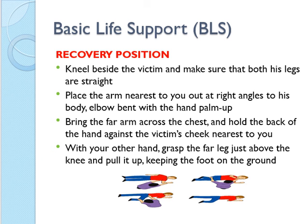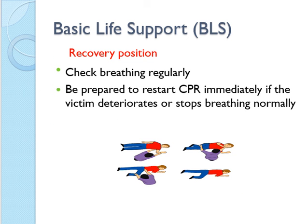To put the individual in the recovery position, kneel beside the victim and make sure the legs are straight. The arm nearest to you should be put at a right angle to the body, elbow bent, with the hand palm up. Then bring the far arm across the chest and hold the back of the hand against the victim's cheek nearest to you. With your other hand, grab the far leg just above the knee and pull it up, keeping the foot on the ground. The picture on the screen shows the different steps to put the individual in the recovery position.